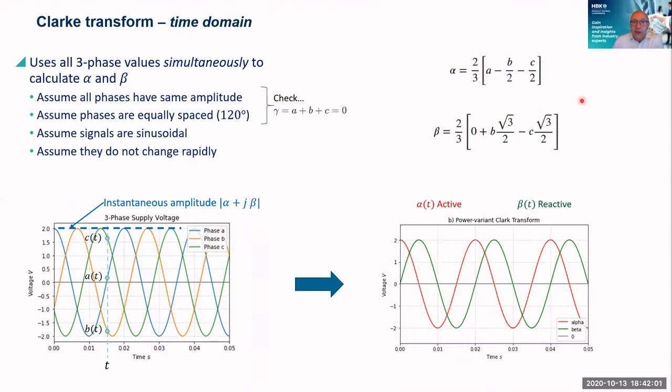So it's a very simple linear calculation here. Alpha is simply my voltage on the A phase minus half of my B phase minus half of my C phase times two thirds. I can calculate beta in an equivalent way.